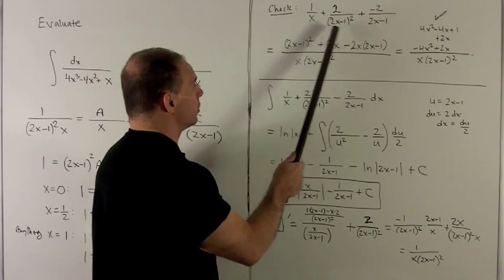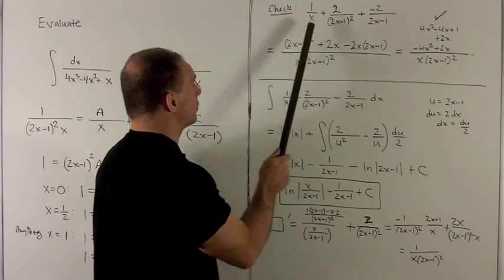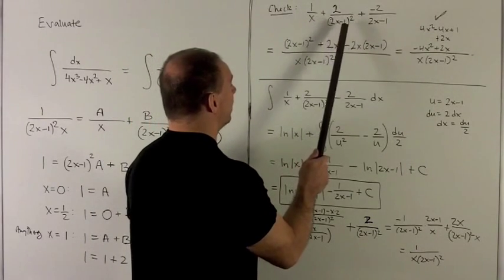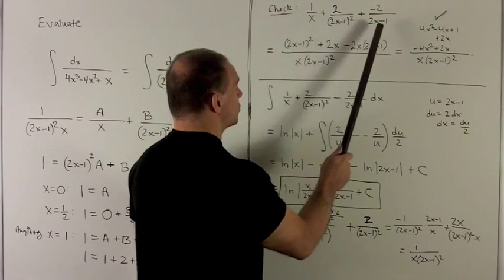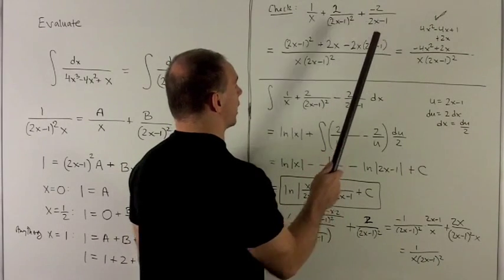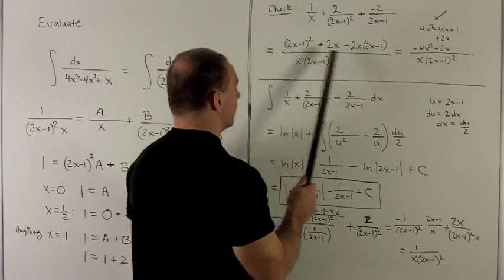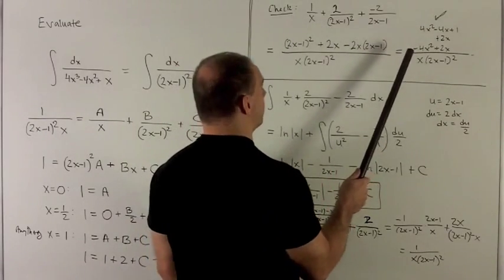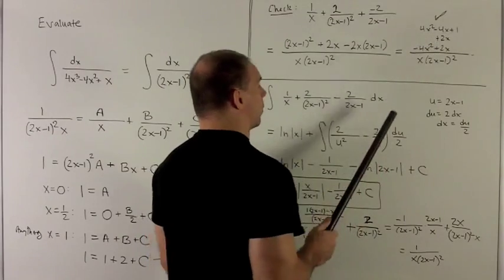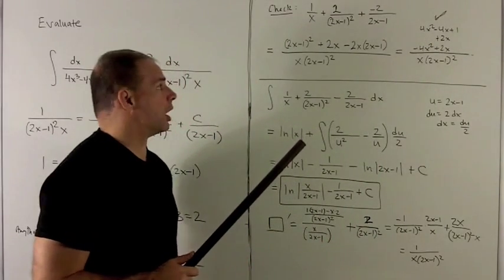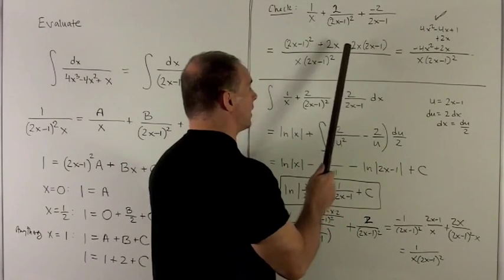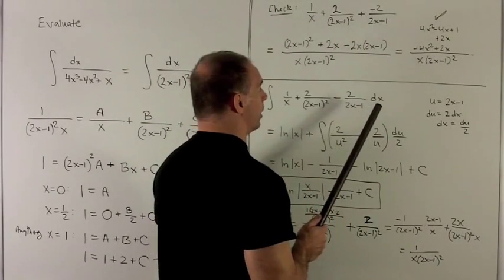So all we're going to do is put everything over a common denominator. Okay, so this is missing a 2x minus 1 squared. This one's missing a factor of x. And this one's missing a factor of x times 2x minus 1. So we're going to get this on the top. And I'll just expand one piece at a time. The first gives me 4x squared minus 4x plus 1. The next piece just goes in as a 2x. And then the last piece goes in as minus 4x squared plus 2x.